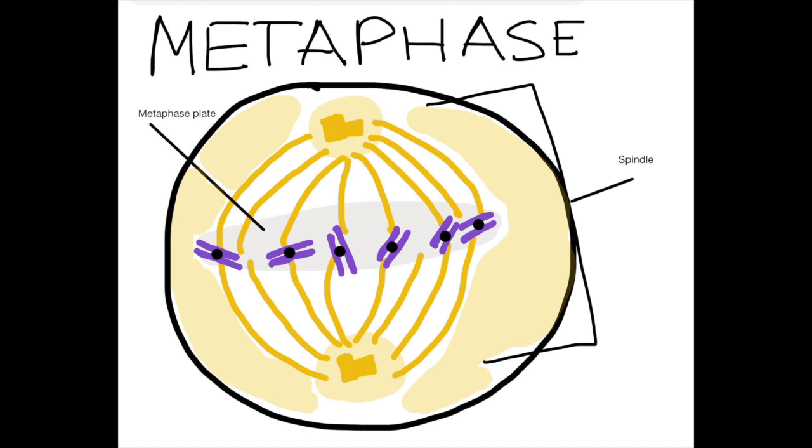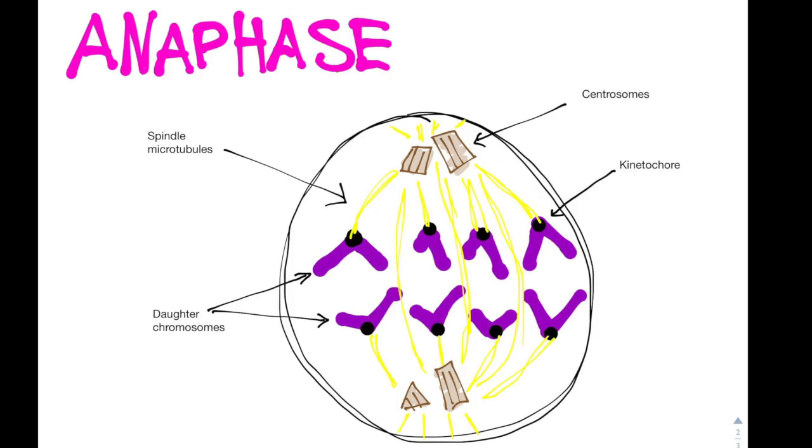The cell then goes into anaphase. The centromeres begin to separate, separating the sister chromatids. Spindle fibers help separate the sister chromatids. The motor proteins of the kinetochores move the sister chromatids to opposite sides of the microtubules of spindle fibers.